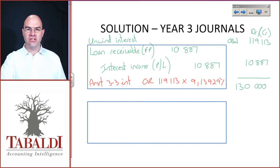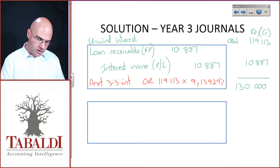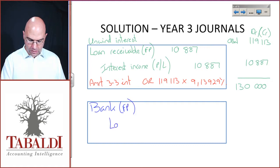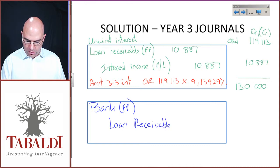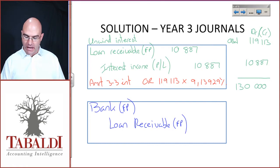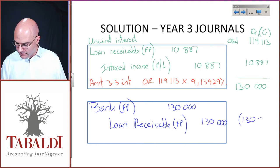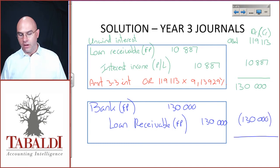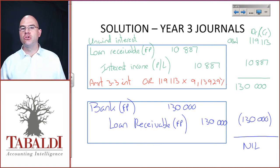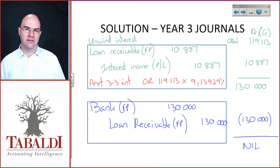What's the final step? I'm going to receive the money. So I debit bank (financial position) and credit loan receivable. It's no longer an asset because I've received the cash — there's no more future benefit — so I reverse it out by crediting it for the full 130,000. I have unwound the interest up to 130,000 and the closing balance is now zero. Please make sure you can work your financial calculators and do not rely purely on manual calculations. Excel also has some great functions, as do most spreadsheet programs.